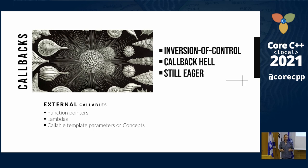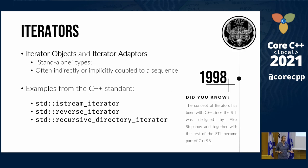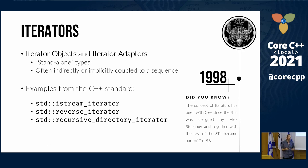Although callbacks allow us to have non-closed functions because we outsource the actual operation, these functions are still eager — they're still iterating over all of the elements of our sequence. It begs the question: is there a way to somehow flip all of these subroutines inside out, such that we can allow them to be lazy, and also not commit to some predefined operation? The answer, which most of you already know, has been with us since Alex Stepanov came up with the concept of iterators back in 1993, and we've had them in C++ since 1998.